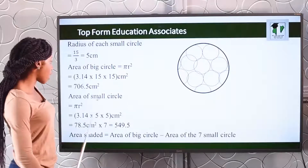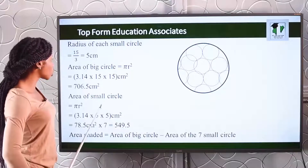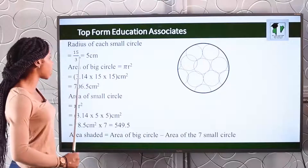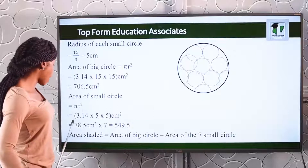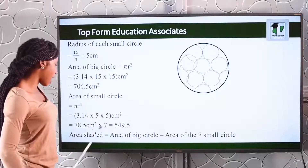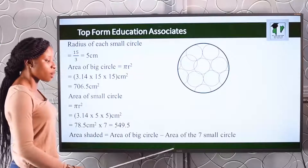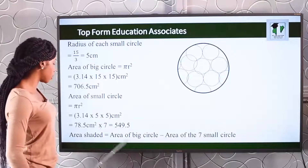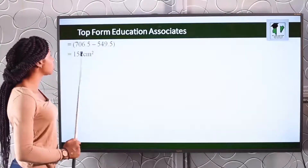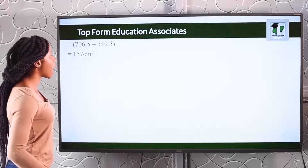Now let's find the area of each small circle. The radius of the small circle is 5 centimeters. Using pi r squared: 3.14 times 5 times 5 gives the area of each small circle. To get the shaded area, we subtract the area of the small circles from the big circle. The final answer for the shaded area is 157 centimeters squared.